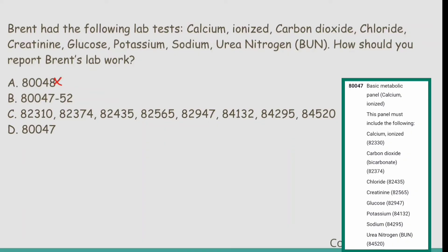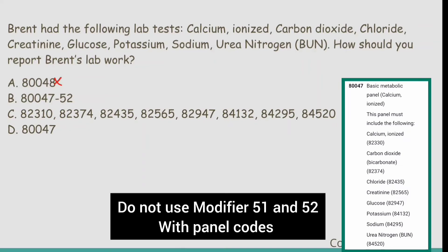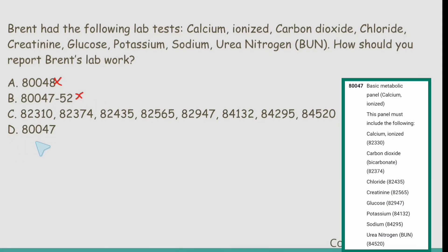Looking at option B, 80047 is for Basic Metabolic Panel Calcium Ionized, which includes calcium ionized, carbon dioxide, chloride, creatinine, glucose, potassium, sodium, and urea nitrogen — so 80047 is the right code. However, option B appends modifier 52, and remember the guideline that we should not use modifier 51 or 52 with panel codes, so eliminate option B. Option D also mentions 80047 and that is the right answer.